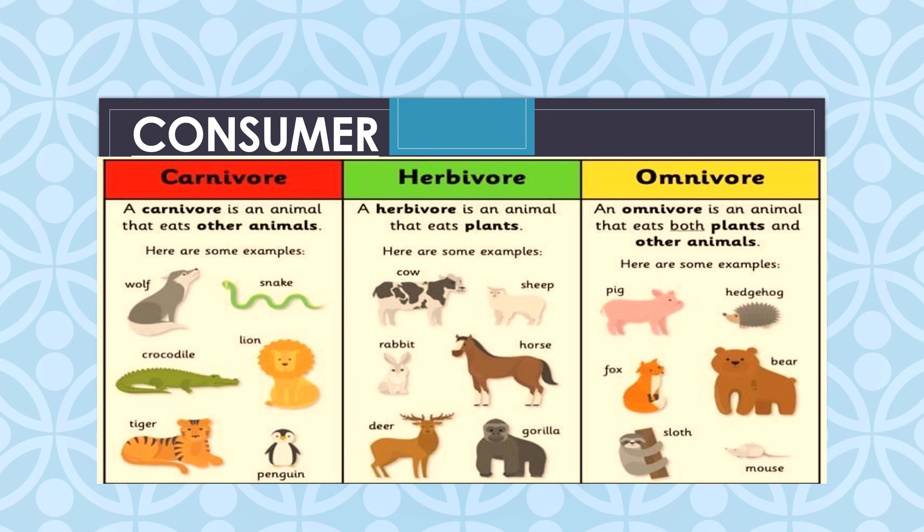The third category is omnivores. Some animals eat both plants and other animals and are called omnivores — they are both vegetarian and non-vegetarian. For example, human beings, cockroach, crow and bear. Some carnivores that feed on dead animals are called scavengers — for example, hyena, vulture and jackal.